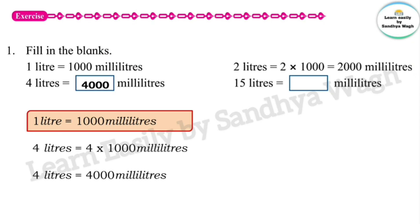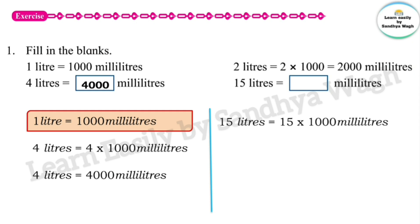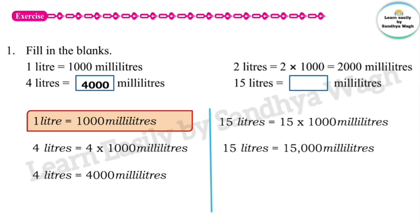Two litres is equal to 2 multiplied by 1000, which is 2000 millilitres. Then 15 litres is equal to how many millilitres? 15 litres is equal to 15 multiplied by 1000 millilitres, which is 15,000 millilitres.